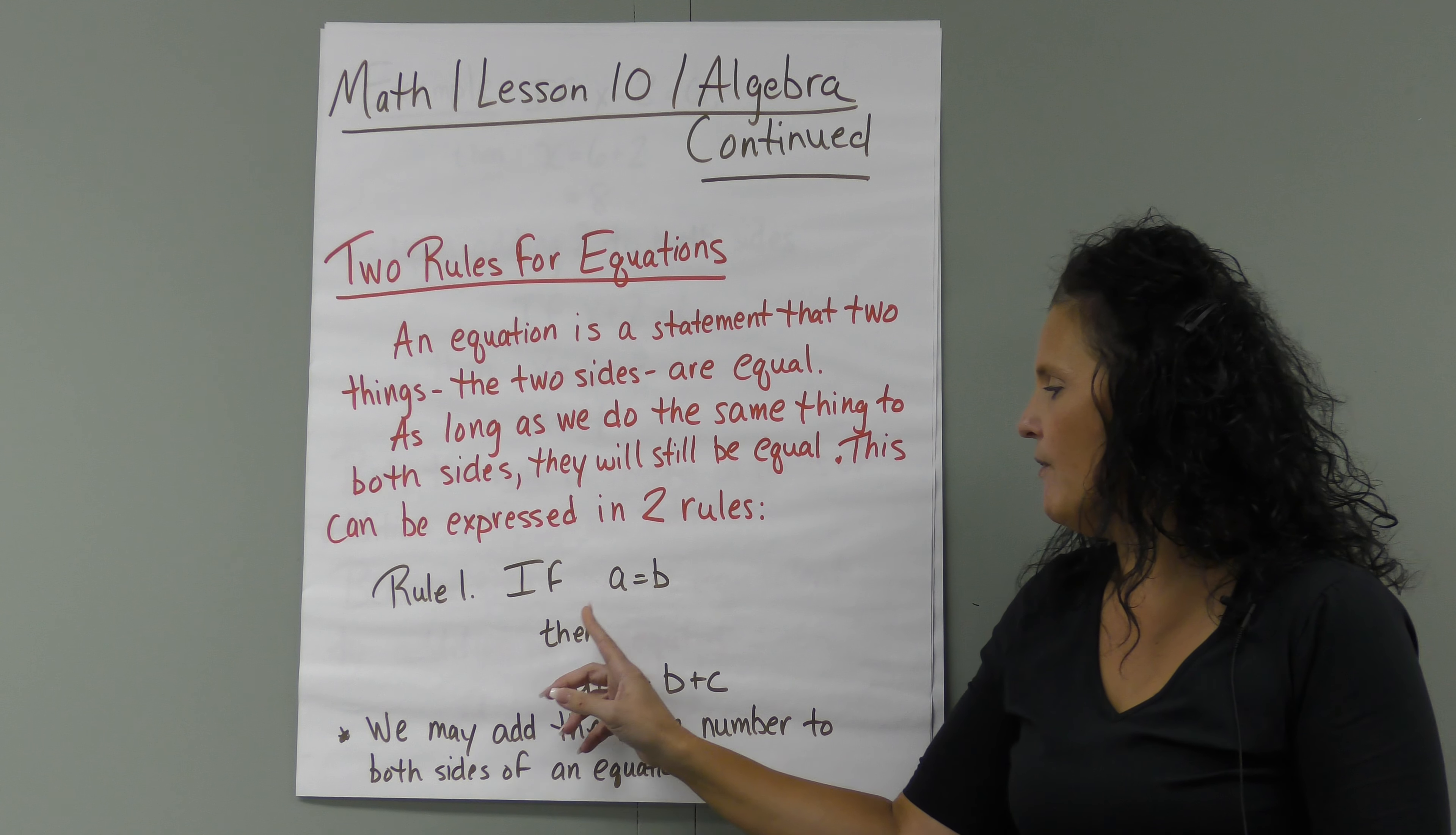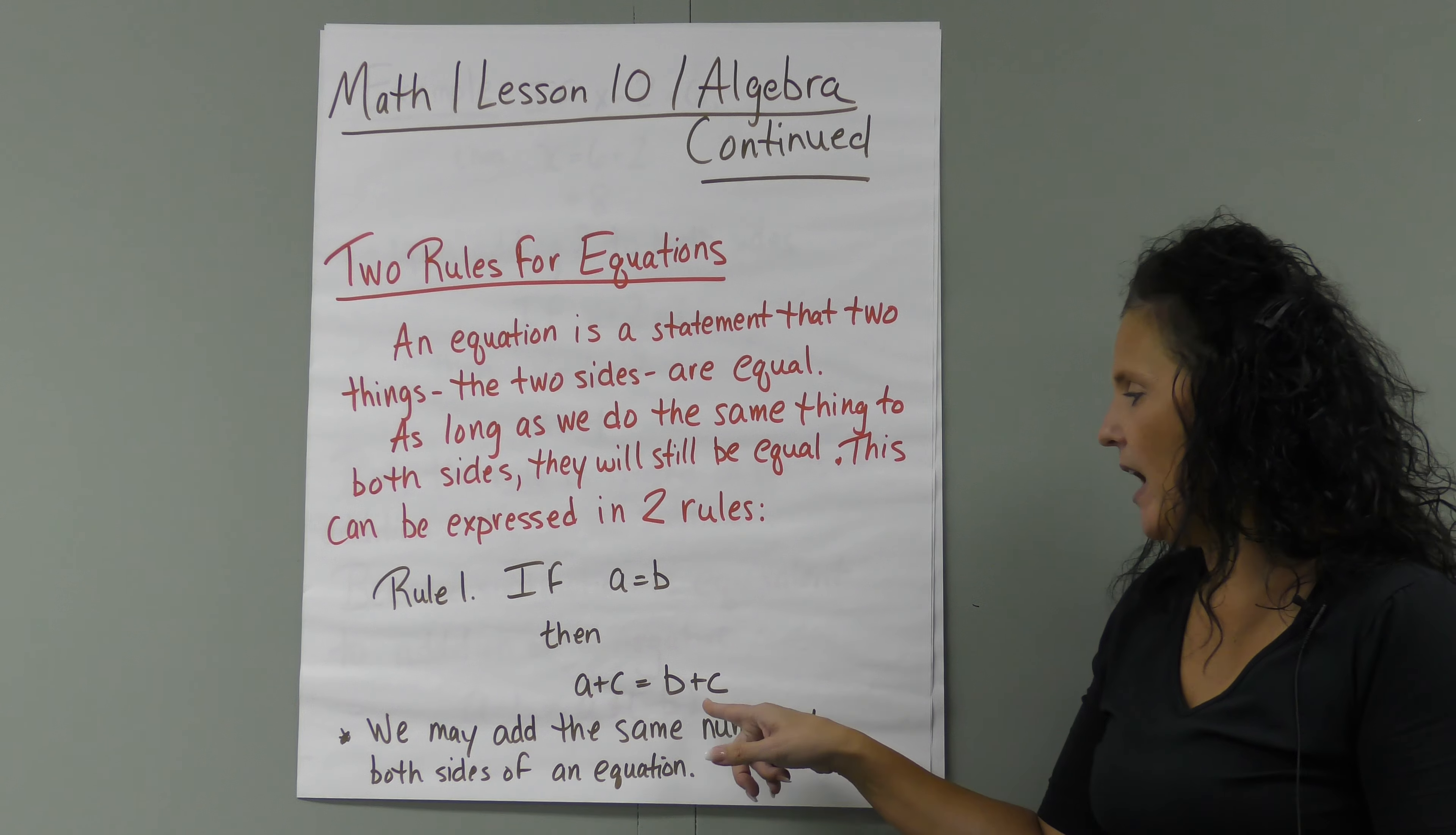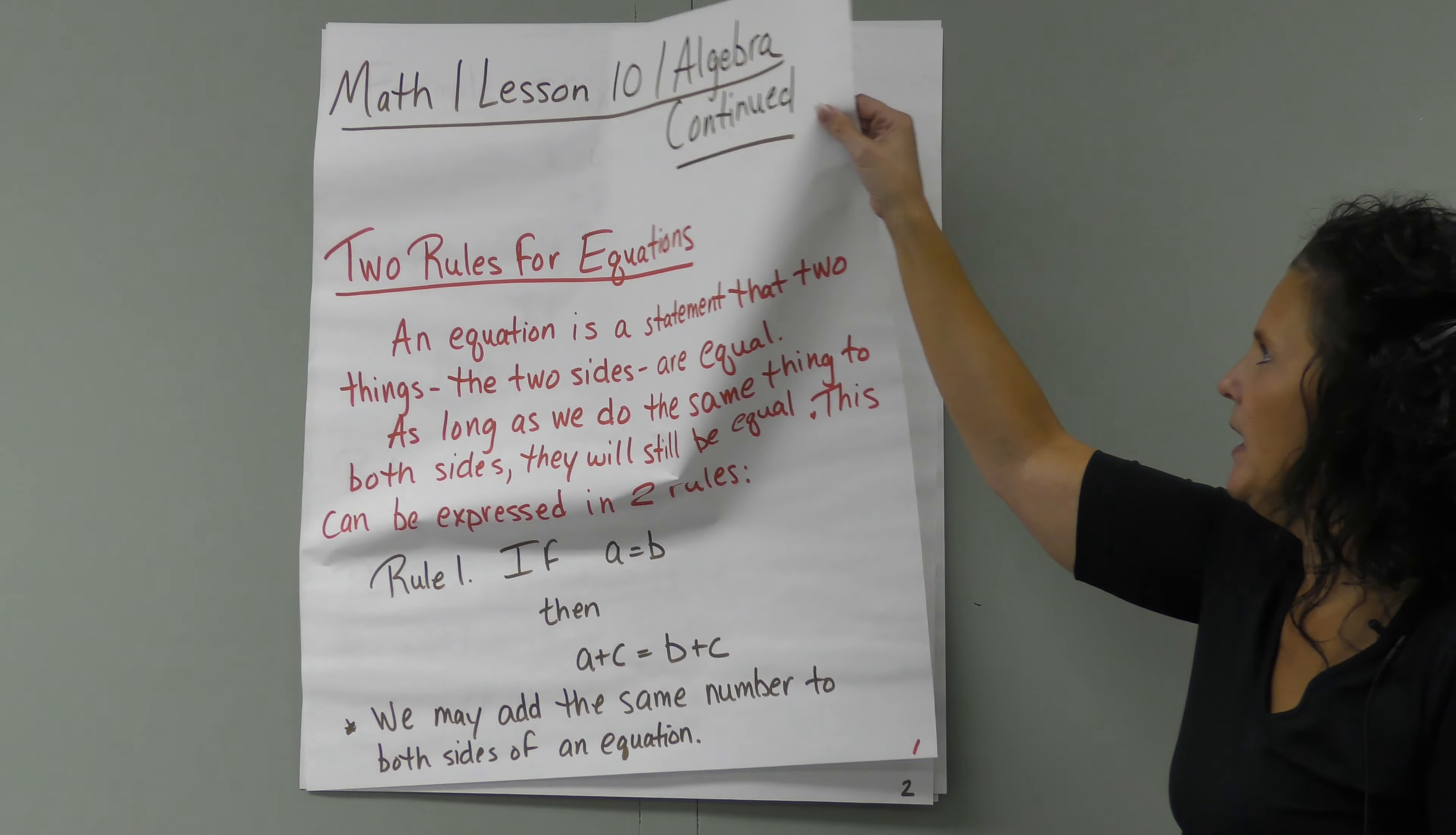Rule number one: if A equals B, then A plus C equals B plus C. If we added C on this side of the equation, we have to add C on this side, which keeps them the same. We can add the same number to both sides. No matter what number we add to both sides, that would be even.